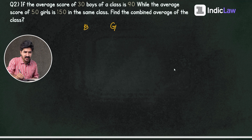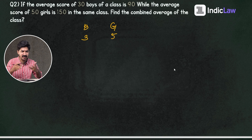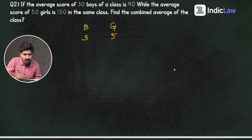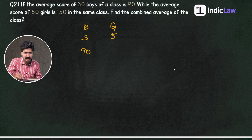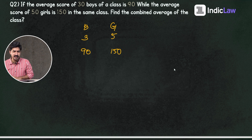Where is the average score of 30 boys? Where is the average score of 50 girls? So we will work with the numbers that we have — three boys and five scores. How many boys' average for boys? So, we've also asked a few questions.